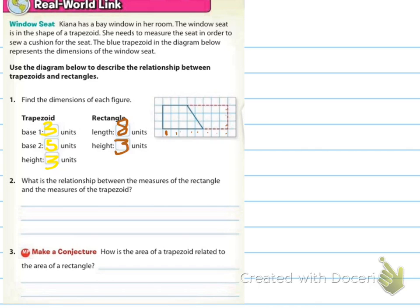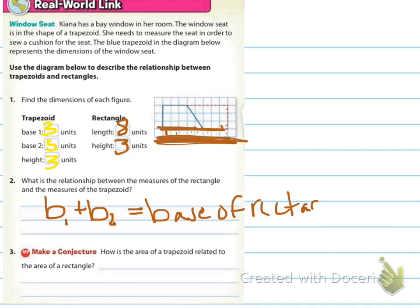So it says, what is the relationship between the measurements of the rectangle and the measurements of the trapezoid? So just talking it out, it looks like the measurements for the base of the rectangle are the big base, or base sub two, plus base sub one. So I would say that B1 plus B2 equals the base of the rectangle. And then the heights are the same, whether you're talking about the trapezoid or the rectangle.